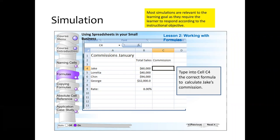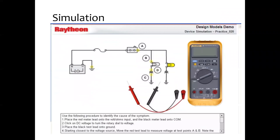Simulations are relevant as they require the learner to respond according to the instructional objective. This is a simple version of a simulation where students are actually doing the work in a spreadsheet. There are also more complicated simulations — simulating an operation for safety, or simulating things that don't happen in the real world very often to get repetition in practice. Here's a simulation example of electrical circuits where learners use a meter to debug and find the cause of an error, getting actual values by placing meter pointer ends at various points.